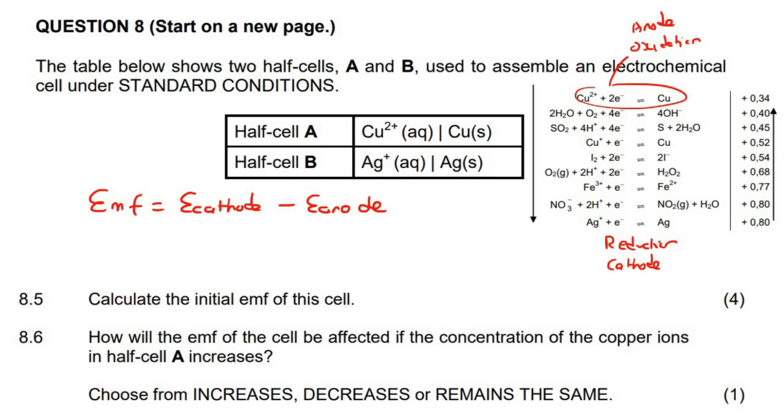So to work out the, or to do this formula, so we need the value at the cathode. So we just look at the value at the cathode, which is 0.8 minus. And then we look at the value at the anode, which is 0.34. And that's it. You just go minus those two. And that's going to give you 0.46 volts.